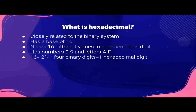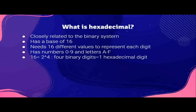Next, hexadecimal. So what is a hexadecimal? Hexadecimal is another number system that is closely related to the binary number system. Unlike binary which has a base of 2, hexadecimal has a base of 16, which means it has 16 different digits. It needs 16 different values to represent each digit. But there are only 10 numbers from 0 to 9, so it uses 6 alphabets, which is A to F. Since 16 is 2 to the power of 4, four binary digits make up one hexadecimal digit.